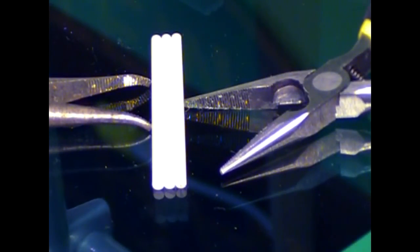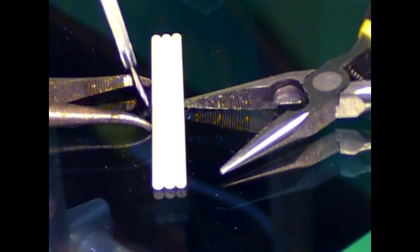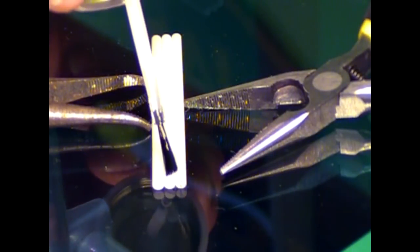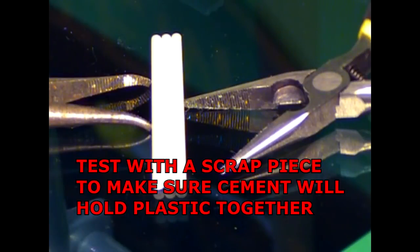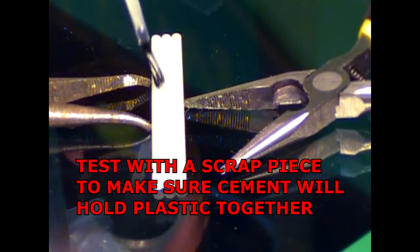So once we got them in place, then take a little bit of cement, run it along through here, get it in between the joints.